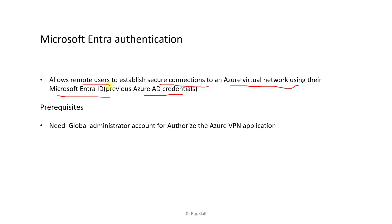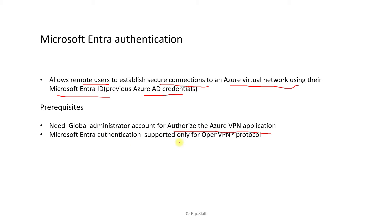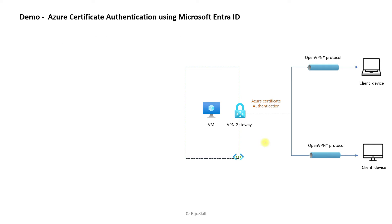A prerequisite is needing a global administrator account to authorize the Azure VPN application. The user needs the global administrator role for authorization of the Azure VPN application. One important thing: Microsoft Entra only supports the OpenVPN protocol. In our demo, you can see one virtual machine, a VPN gateway, and a client device. Our aim is to access the VM from the client device using Microsoft Entra ID over the OpenVPN protocol.